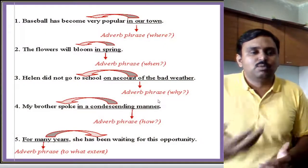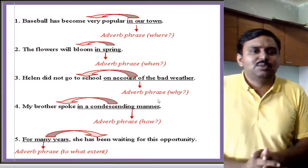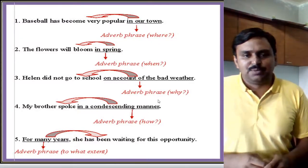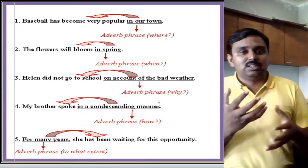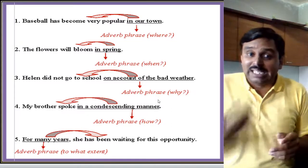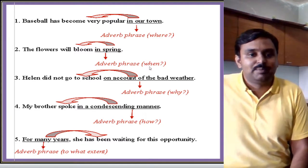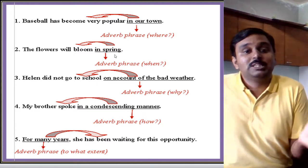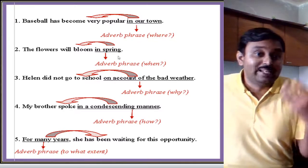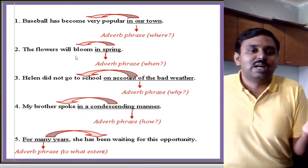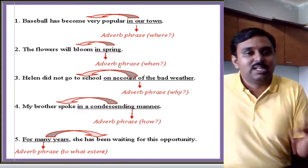Let us look at more examples of adverb phrases. 'Baseball has become very popular in our town.' In our town, the action 'become popular' has been described by the phrase 'in our town,' which becomes an adverb phrase answering where. Another example: 'The flowers will bloom in spring.' It is describing the action — where and when it will happen. So 'in spring' becomes an adverb phrase.